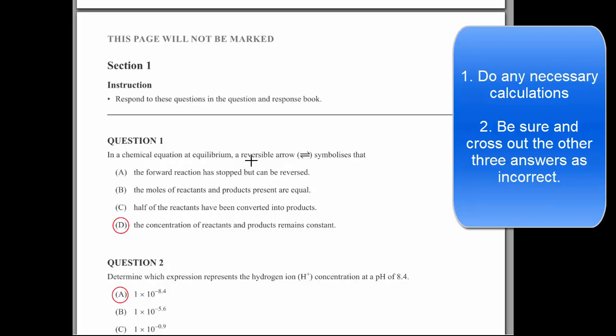So in a chemical equation, equilibrium reversible arrow symbolizes that. A forward reaction is stopped but can't be reversed. That can't be true because it's reversed. Most of the moles are equal. We know that that's not the case. It can be different ratios on either side. It moved either side with temperature and things like that. Half the reactants are being converted into the product, so it's got nothing to do with those. So that one's a fairly easy one.